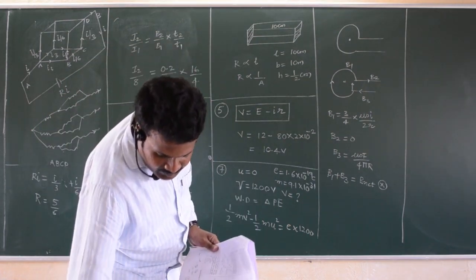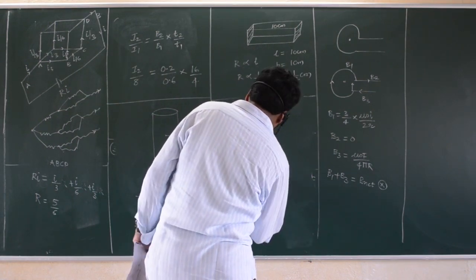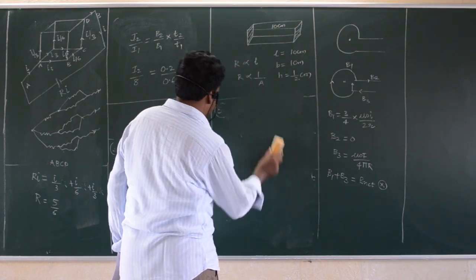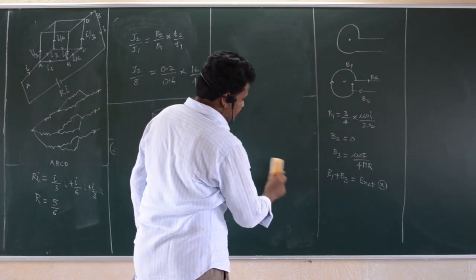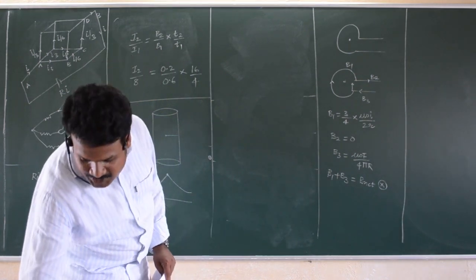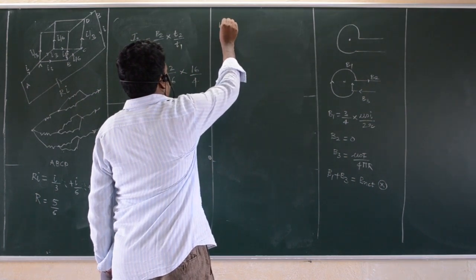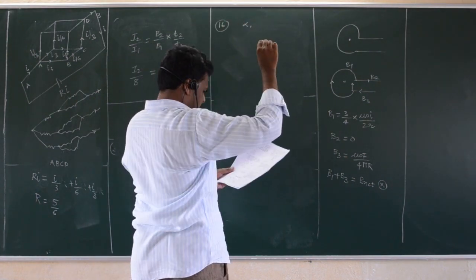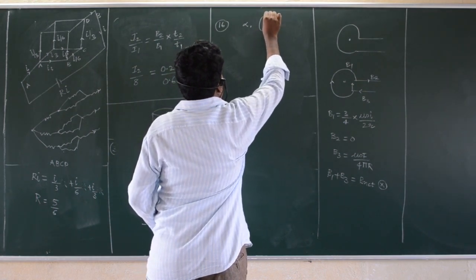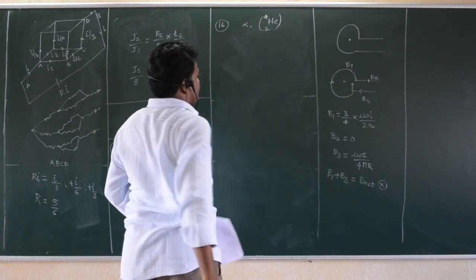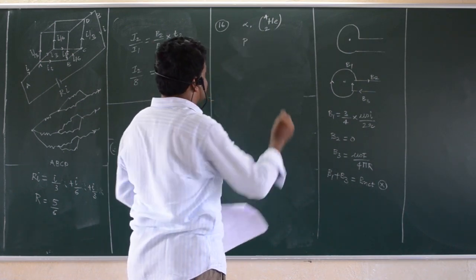Next question is based on cyclotron. Last year also you got one question from cyclotron. Similarly, this year he has given a question involving an alpha particle with its mass and charge given, and mass given for a proton. Proton is given as H-1-1, and deuteron is given as H-2-1.